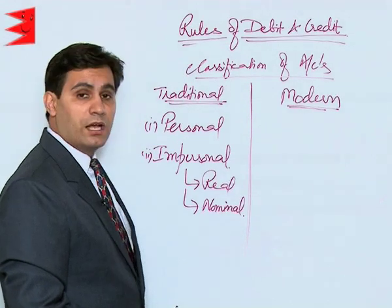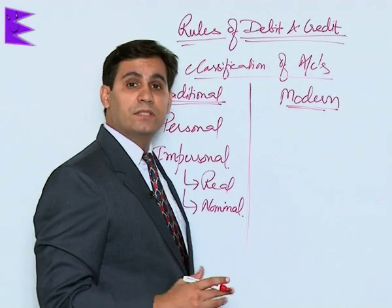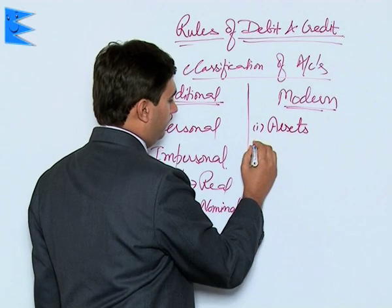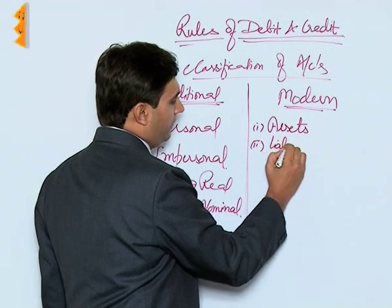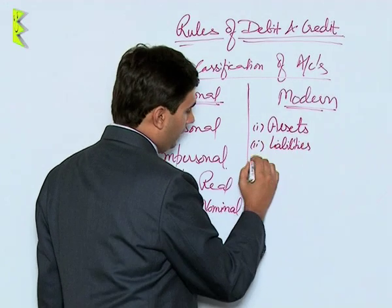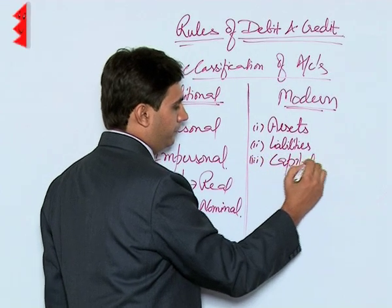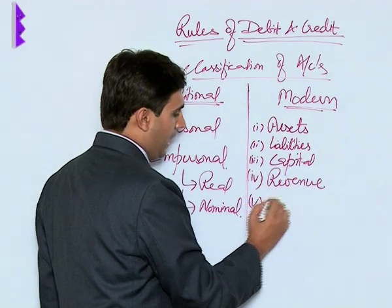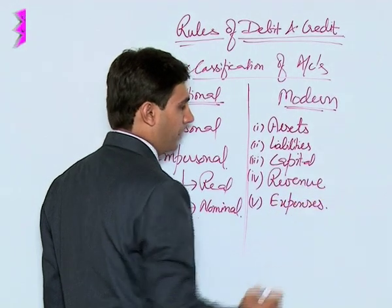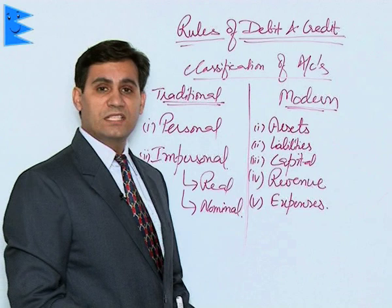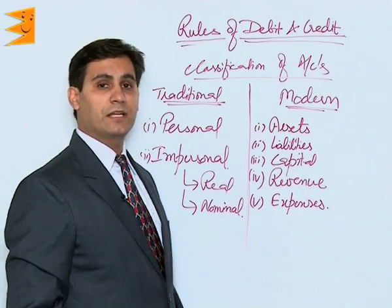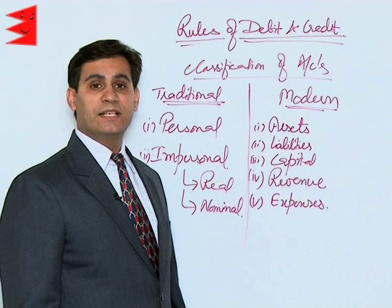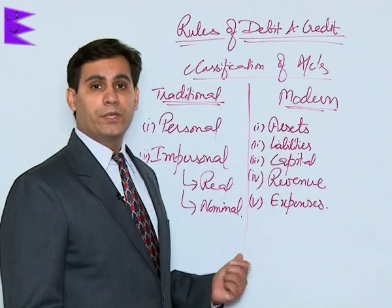Under modern classification, there are five subcategories: assets, liabilities, capital, revenue, and expenses. We will learn how to classify accounts under all these categories and identify which account falls under which category. We must remember that the rules of debit and credit — the increase and decrease — actually depend upon which category a particular account falls under.